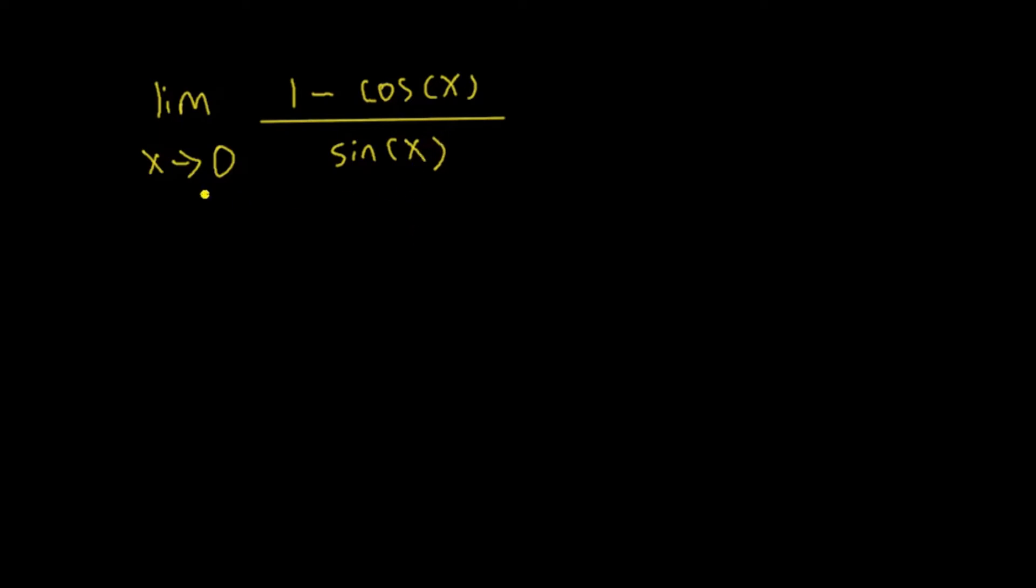Let's try putting 0 into x here first and see what happens. 1 minus cosine of 0, all over sine 0. If you put in the calculator, cosine of 0 is 1, sine 0 is 0. 1 minus 1 is 0, bottom is 0. You get the answer 0 over 0. That's not the answer you're looking for. It's an indeterminate form.